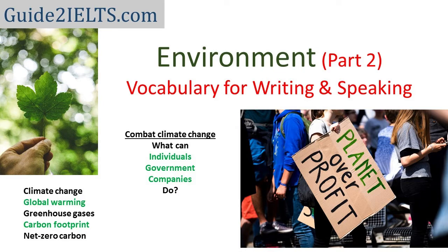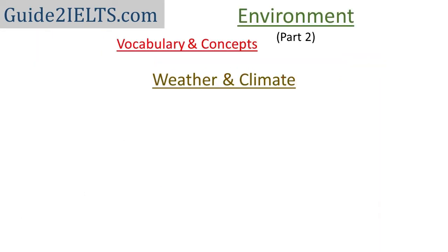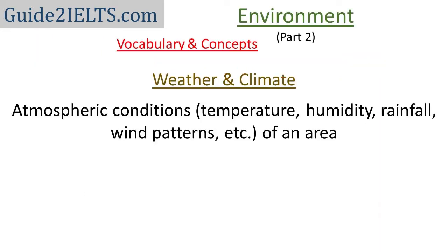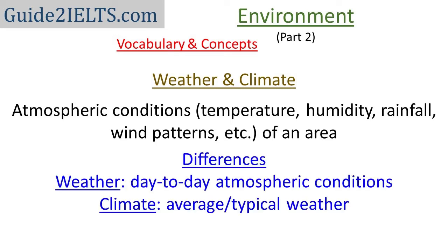We'll begin with the very basic terms: weather and climate. Both of them have a different meaning. Both refer to the atmospheric conditions of an area — that is, the temperature, humidity, rainfall, wind patterns, etc. However, the difference is that weather is day-to-day information. In contrast, climate is the average weather of a particular place.